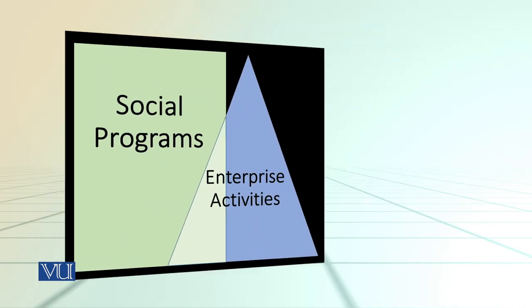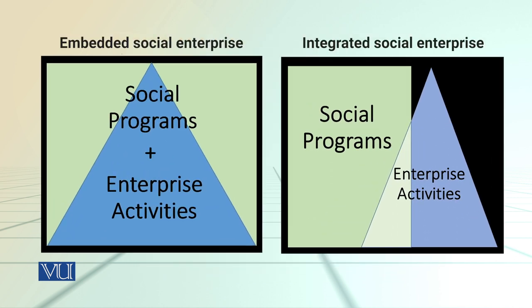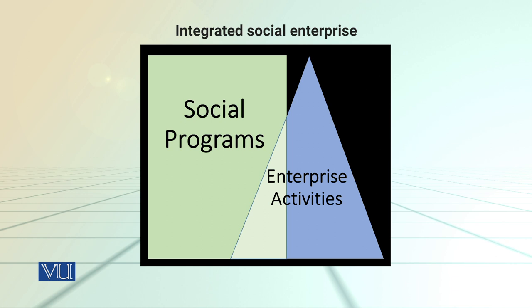Screen पे आप एक diagram देख रहे हैं, previous one से बहुत similar है लेकिन इसको थोड़ा गौर से देखना होगा। पिछली diagram में social program और enterprise activity दोनों एक ही थी, एक दूसरे में merge हुई हुई थी। इस diagram में social program एक distinct square है और enterprise activity एक triangle है — दोनों का एक कोना overlap करता है, एक space share करते हैं। That is integrated model of social entrepreneurship.